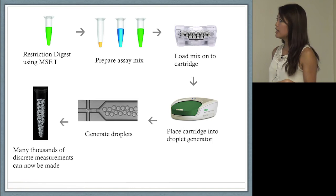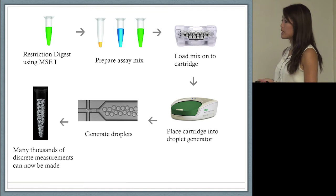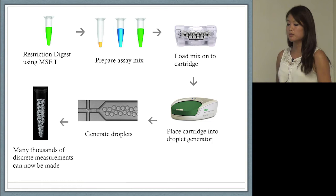We loaded that mix onto a cartridge with special DG oil and placed that into the droplet generator, which would generate droplets and therefore allow many thousands of discrete measurements to be made.